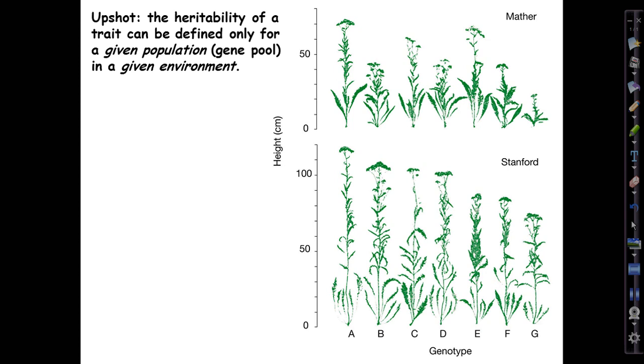The upshot is that the heritability of a trait isn't a property of the trait. It's a property of the trait for a given population, which is to say a given gene pool, in a given environment, and it can't be extrapolated to another population in another environment, or even the same population in a different environment, or a different population in the same environment. All those are equivalent impossibilities.